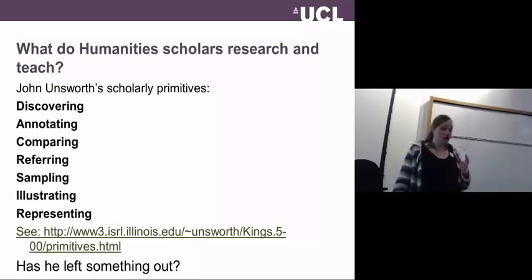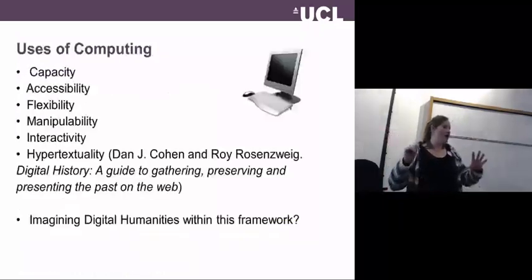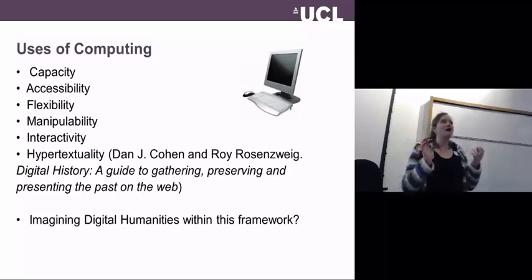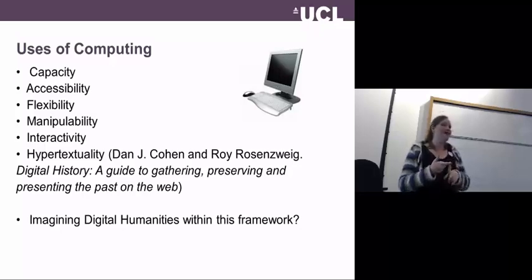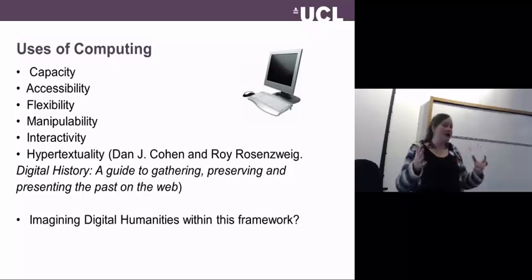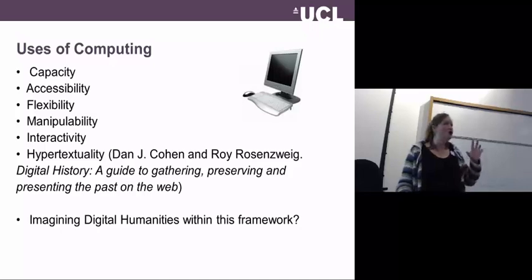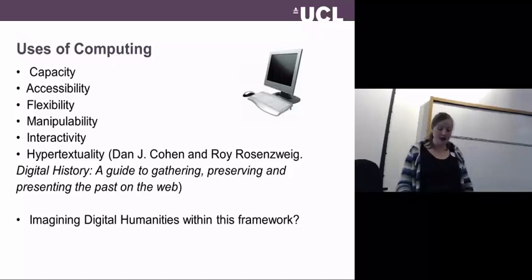My approach is to take Unsworth's scholarly primitives and combine them with the innate capabilities of computing set out by Cohen and Rosenzweig: capacity, accessibility, flexibility, manipulability, interactivity and hypertextuality. For me, digital humanities is about harnessing, interpreting and problematising those generic qualities of digital media in the context of those scholarly primitives.